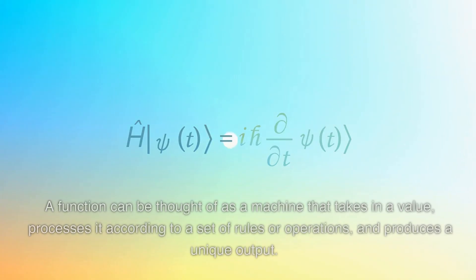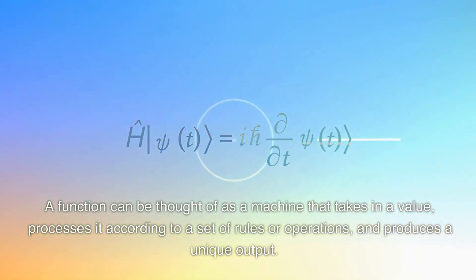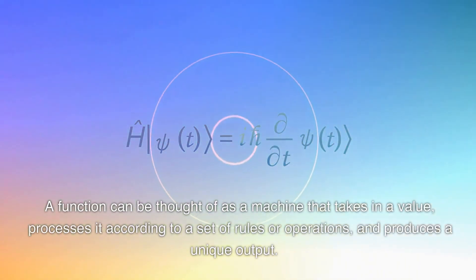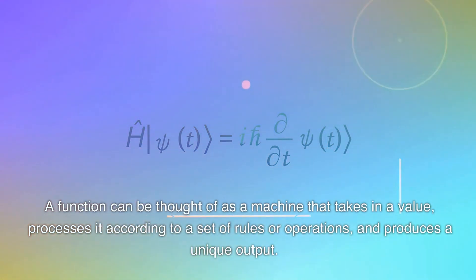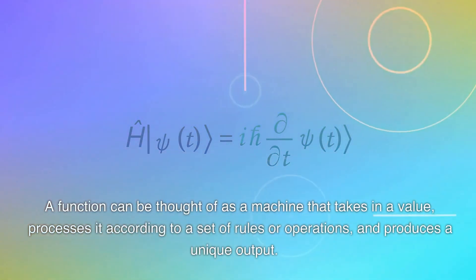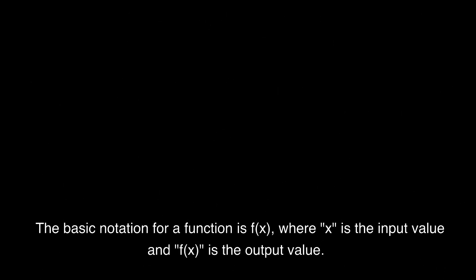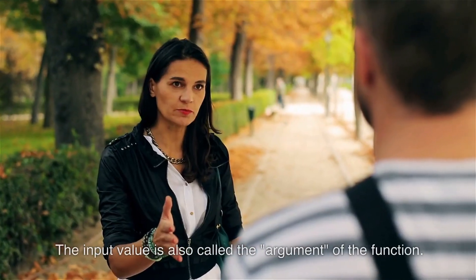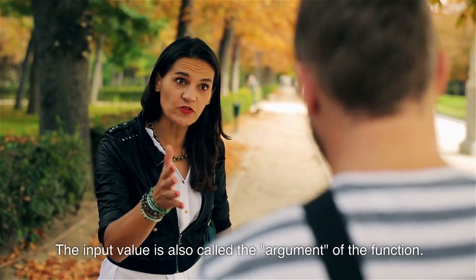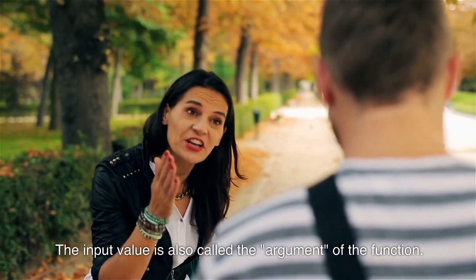A function can be thought of as a machine that takes in a value, processes it according to a set of rules or operations, and produces a unique output. The basic notation for a function is f(x), where x is the input value and f(x) is the output value. The input value is also called the argument of the function.